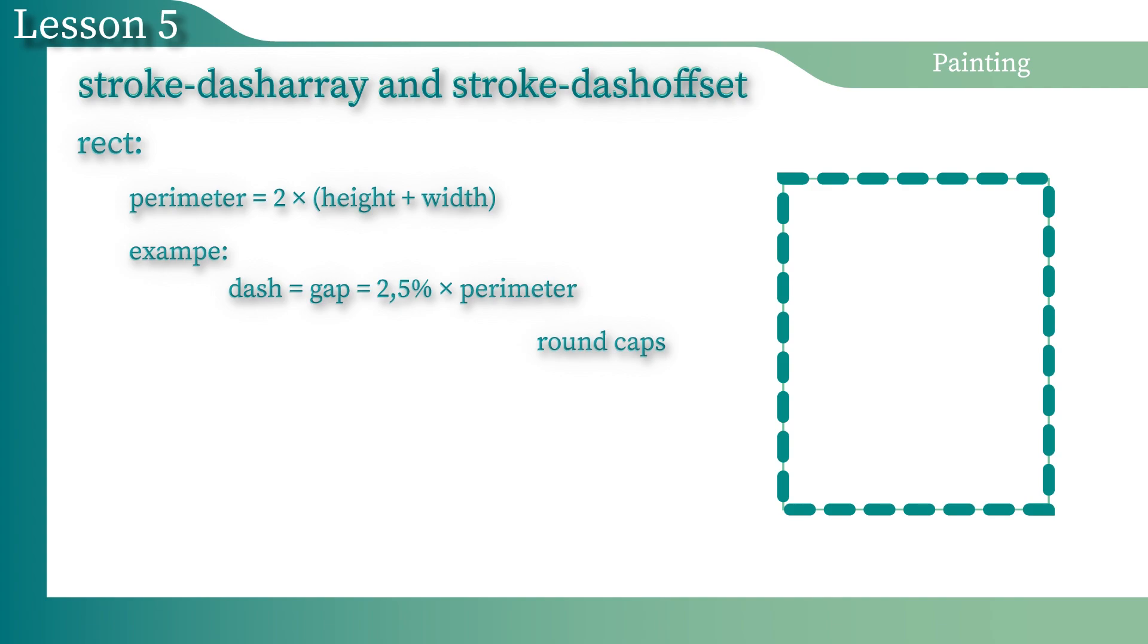Note that this operation will increase the length of the dashes on the half of the stroke width, if the round or square value is set. And that means that it will visually reduce the gaps.